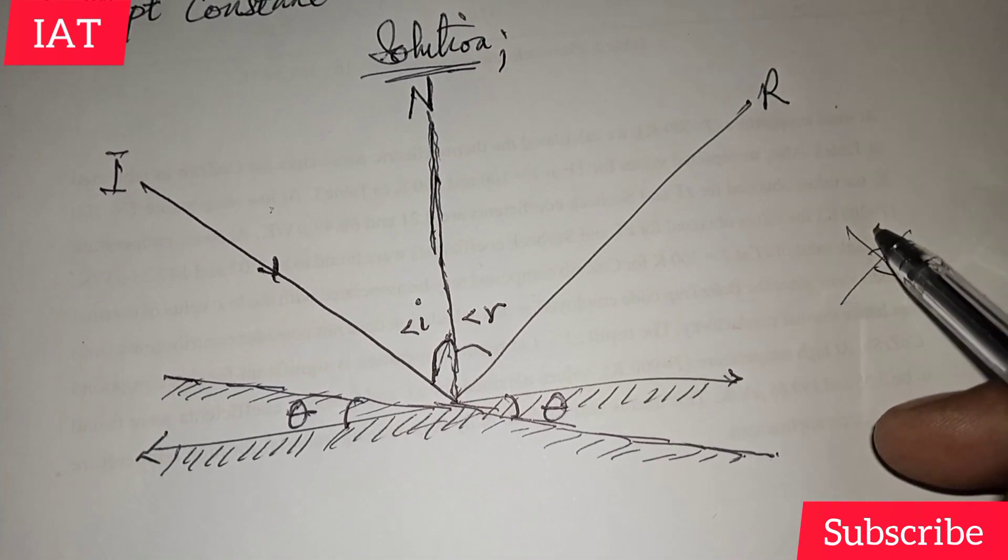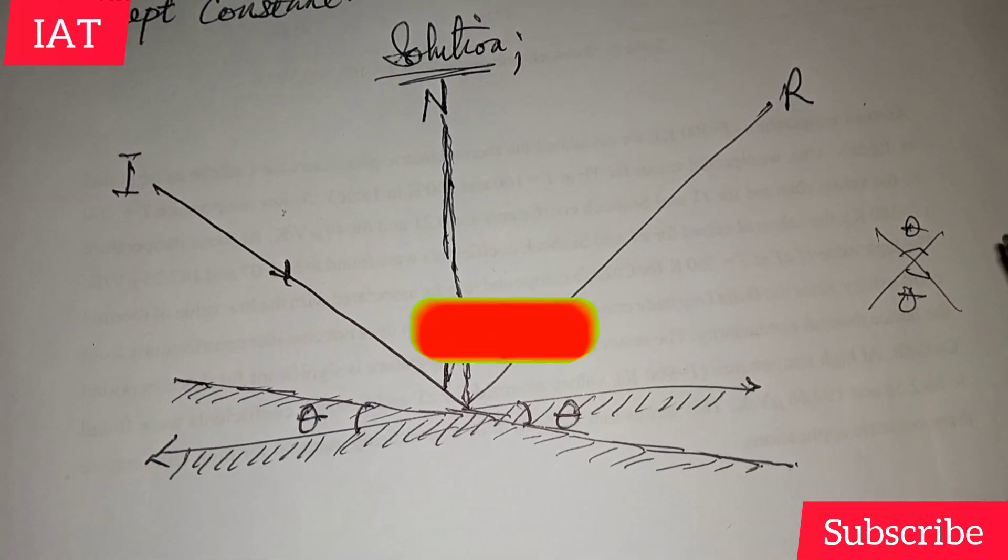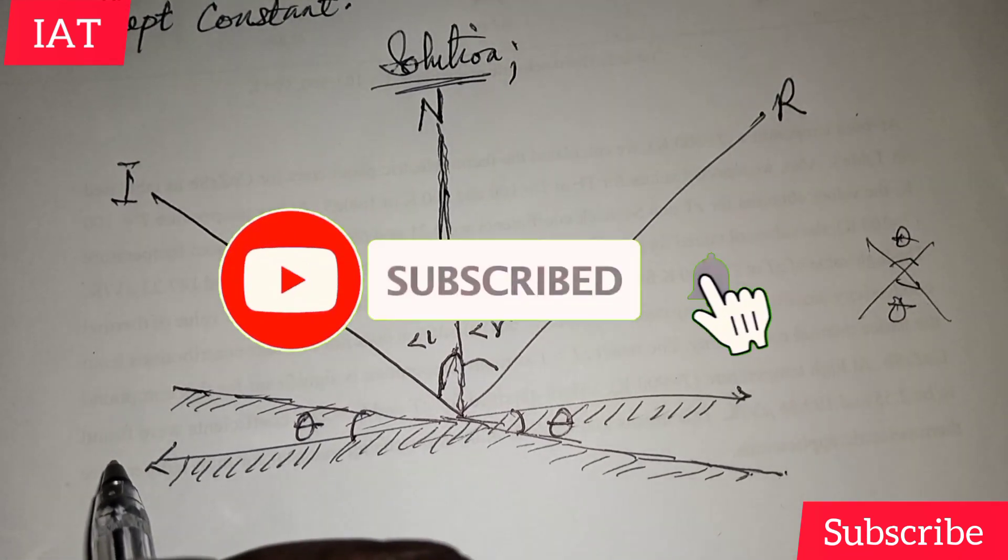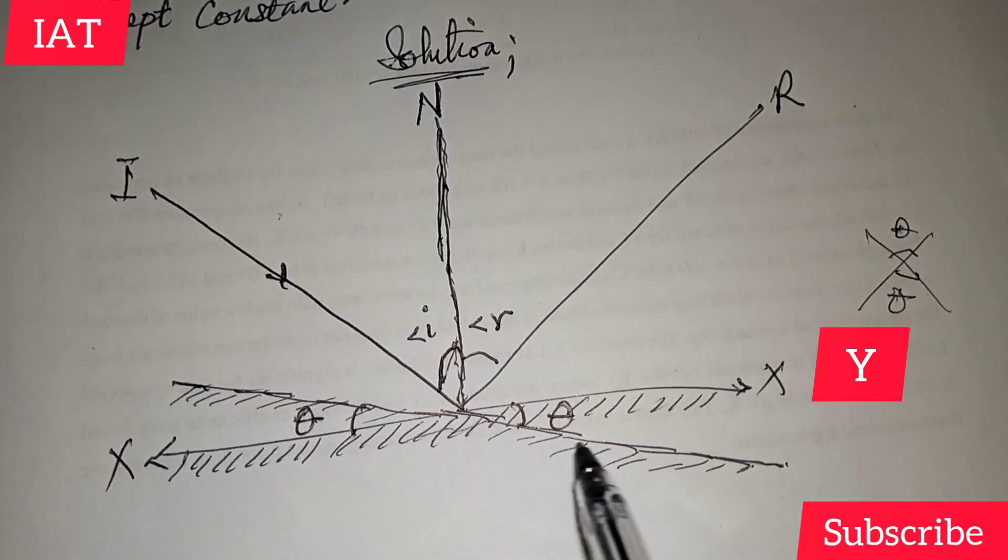When you have something like this vertically, if here is theta, here must be theta. The reason is vertically opposite angles. Right, so we've rotated this mirror that has x and y, and this is the rotation point where we have this to be equal.